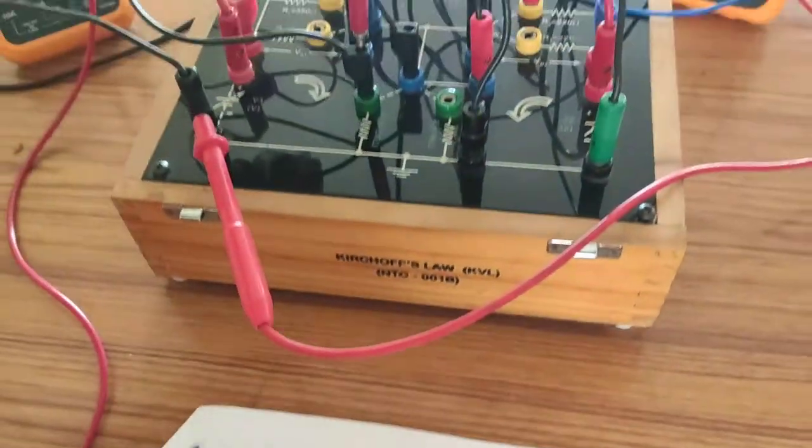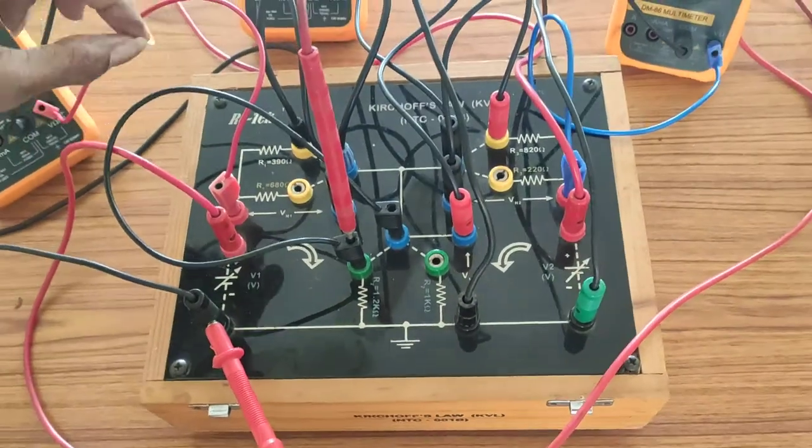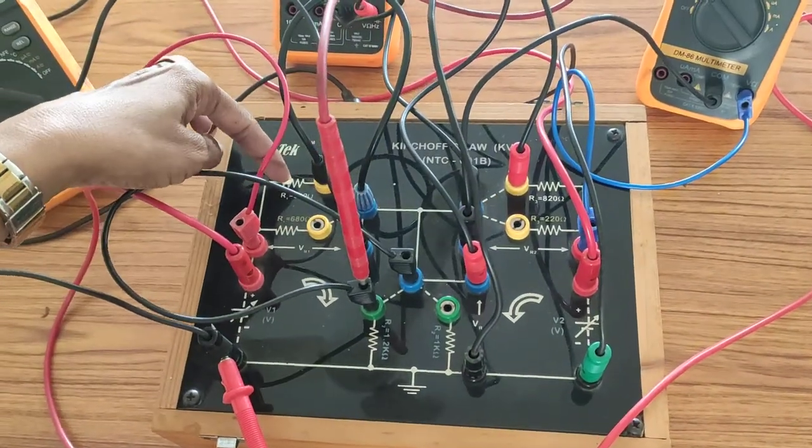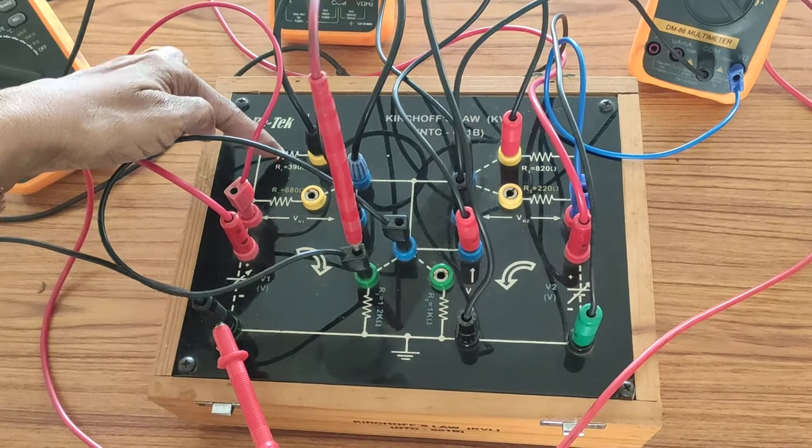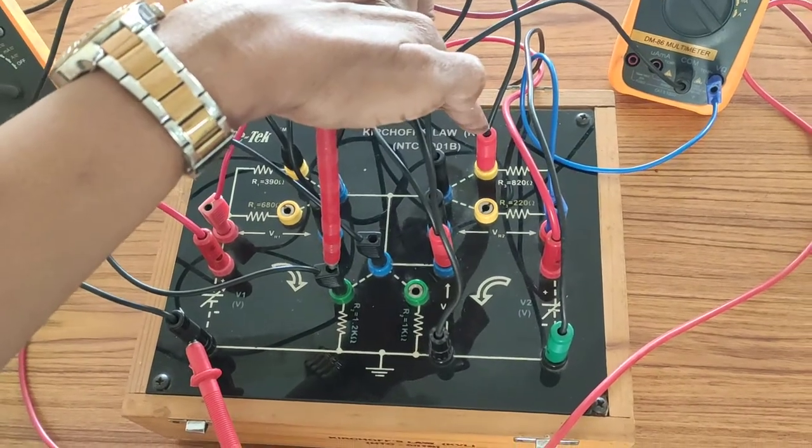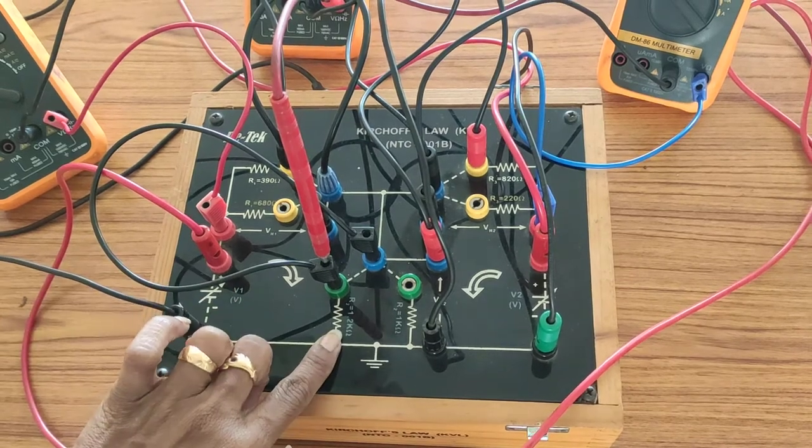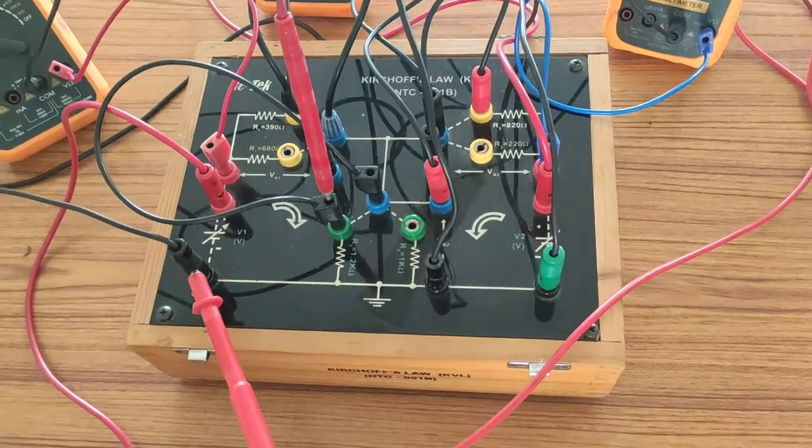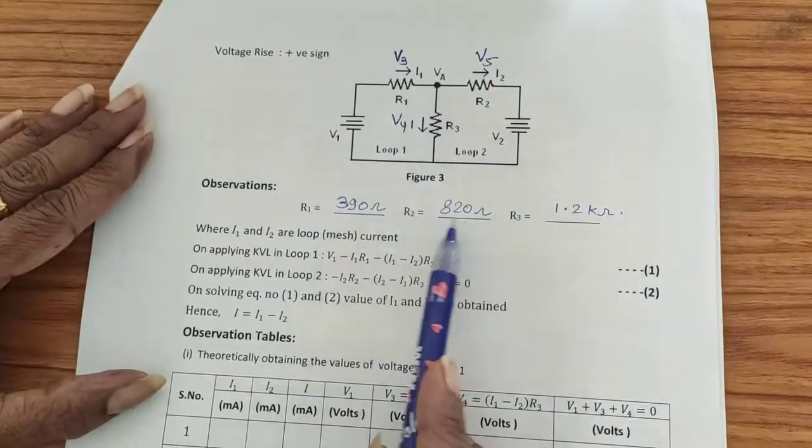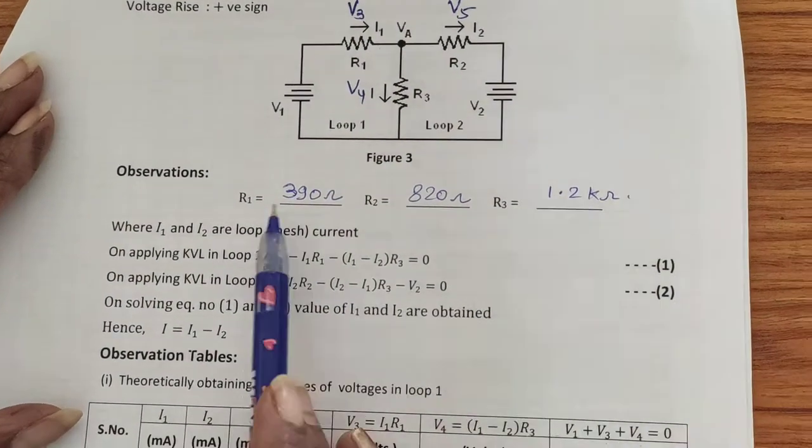As you can see in the circuit, this resistance 390 ohms is R1, this 820 ohms is R2, and this third resistance is 1.2 kilo ohms. The first step is to observe these values and note them down. Here I have noted down the readings of resistances.